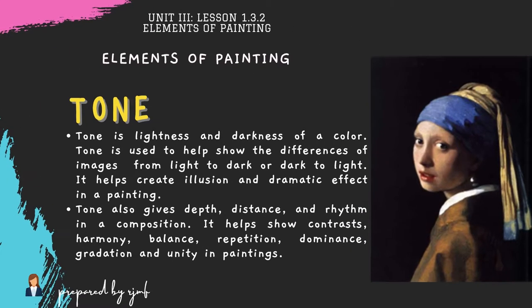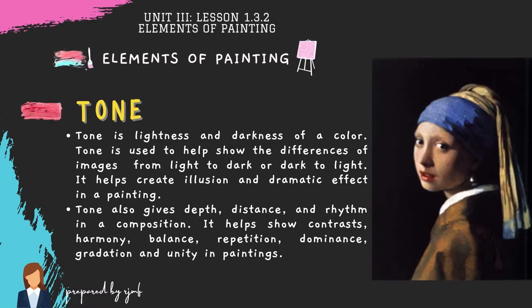We also have tone. Tone is the lightness and darkness of a color. It is used to show the differences of images from light to dark or dark to light, helping create illusion and dramatic effect in a painting. Tone also gives depth, distance, and rhythm in a composition, and helps show contrasts, harmony, balance, repetition, dominance, gradation, and unity in paintings.